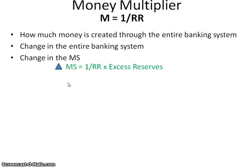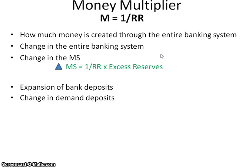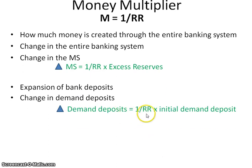One thing students tend to get wrong is that some questions won't ask about a change in the entire banking system. Instead, they'll ask about the expansion of bank deposits or a change in demand deposits. This asks how much money keeps getting recreated, not how much money is new to the system, because that initial deposit was money somebody already had. That's why for demand deposits, you use 1 over the reserve requirement times the initial deposit.